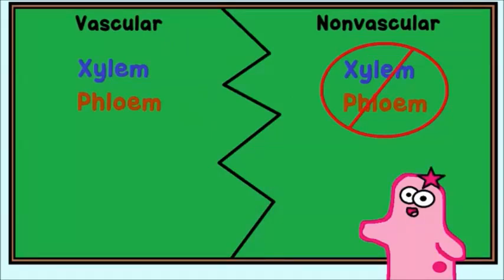A great example of a non-vascular plant is moss. Remember, vascular plants have xylem and phloem, vascular tissue. And non-vascular plants, they don't.